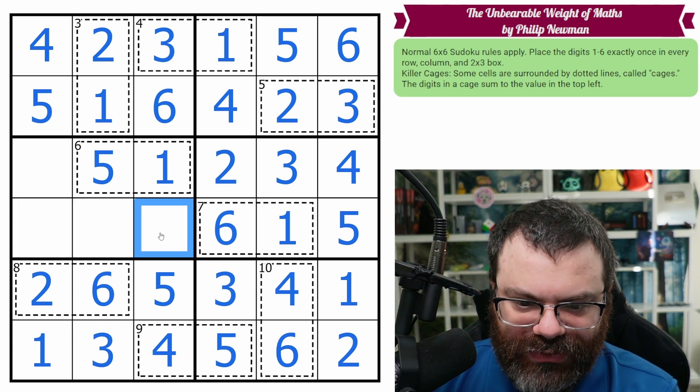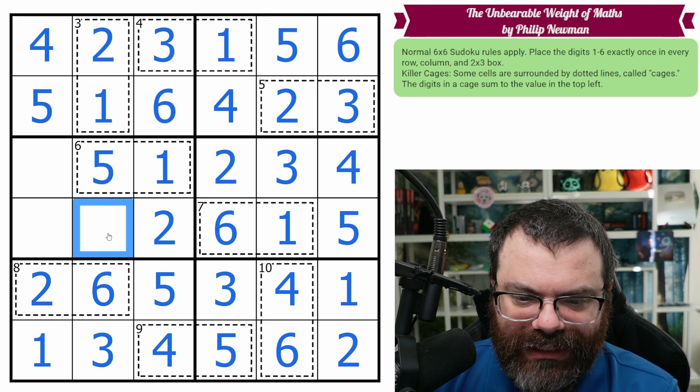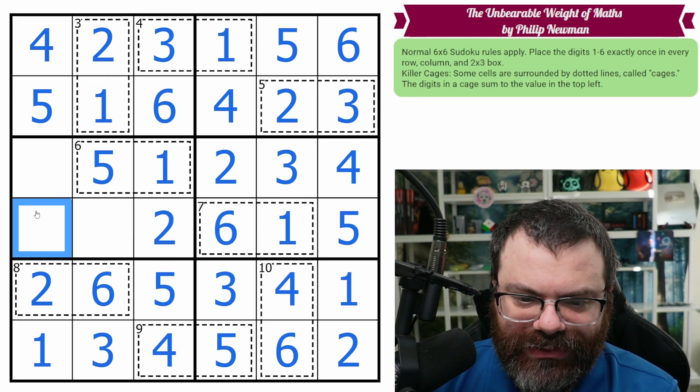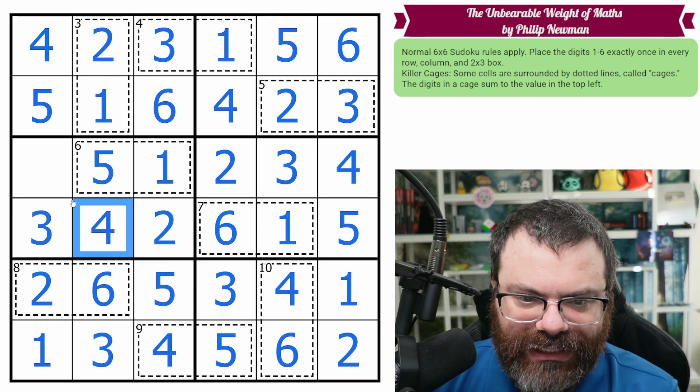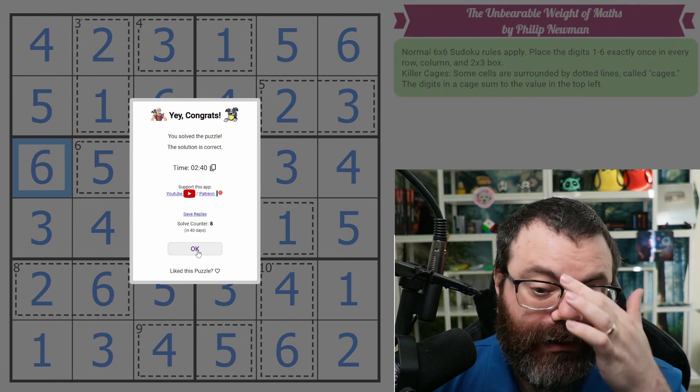Let's just fill these. This box needs a 2. Where does that go? That goes here. Box needs a 3, which goes here. We need a 4 and a 6. Nice. All right, very smooth.